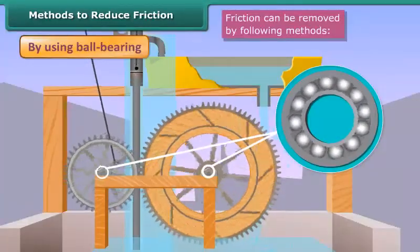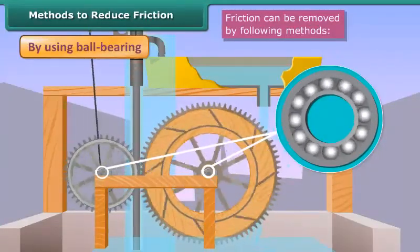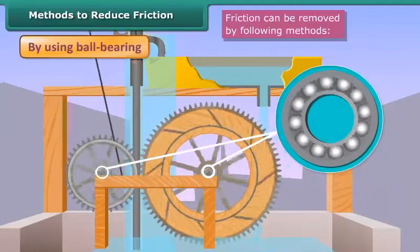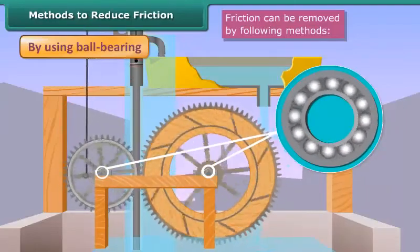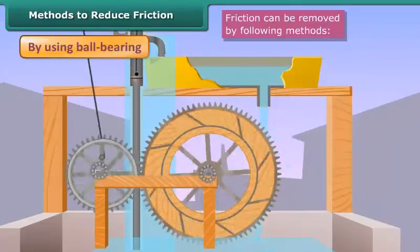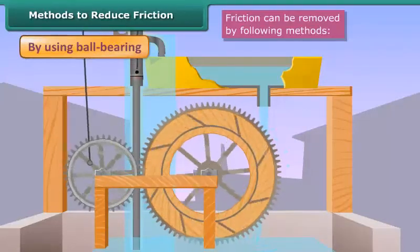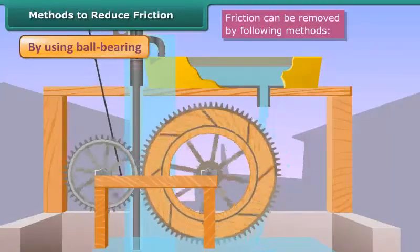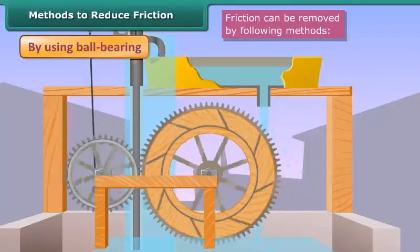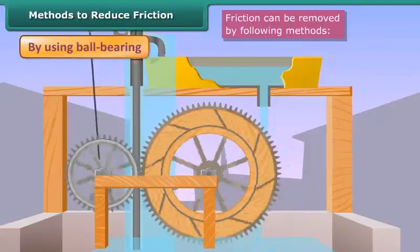By using ball bearings. Ball bearings are a hollow circular device containing small metal balls which is fitted around the moving part of a machine like an axle. The ball bearings reduce friction by converting sliding friction into rolling friction.